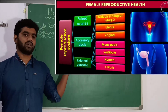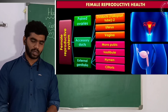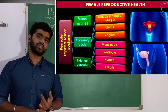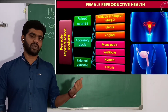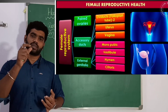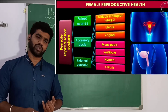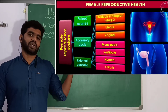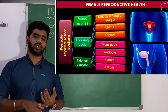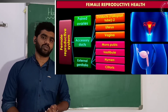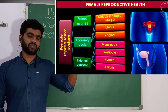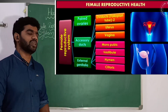So these are the main organs of the female reproductive system: the pair of ovaries as primary sex organs, then the accessory ducts — pair of fallopian tubes, a single uterus, and a single vagina — and finally the external genitalia: mons pubis, vestibule, hymen, and clitoris. Now let us study each of them in detail.